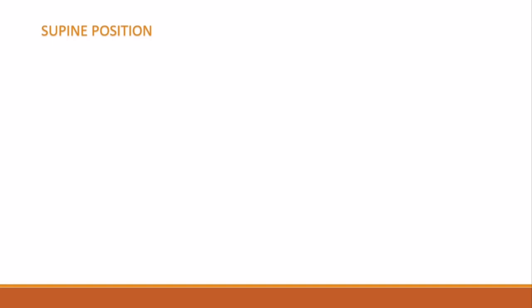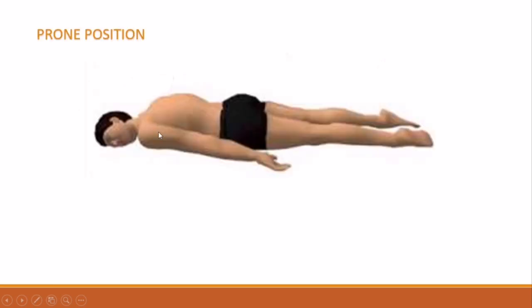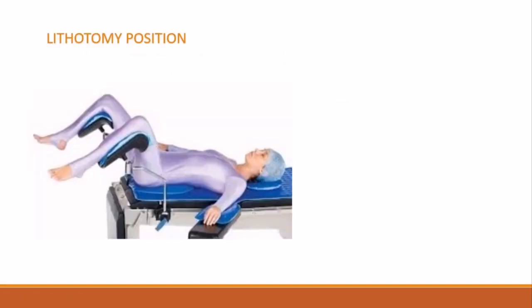In supine position, the person lies on the back with face directed upwards. In prone position, the person lies on the belly or abdomen with face directed downwards. In lithotomy position, the person lies supine with buttocks at the edge of the table.